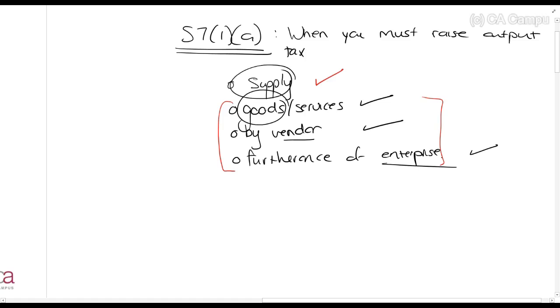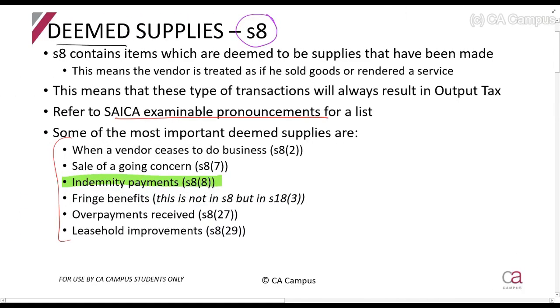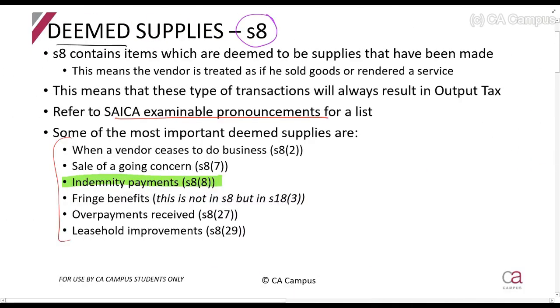But then you'll see section 8 says it is considered a deemed supply. So it basically means, even though there is no real supply, we can treat it as if it is. So then all the requirements are met and there will be output tax. That's what a deemed supply does.